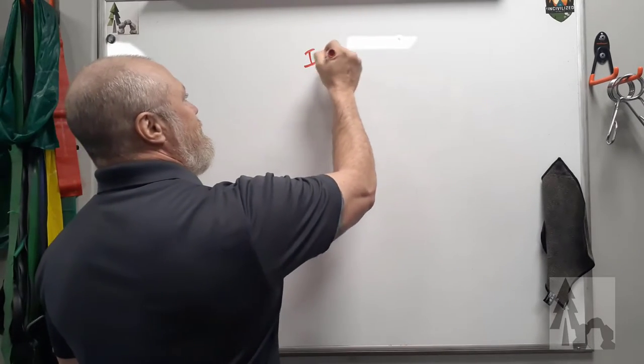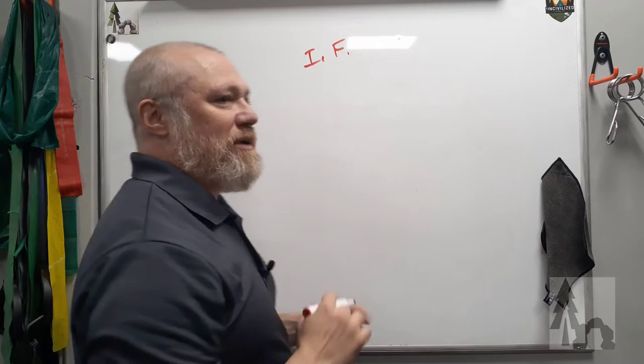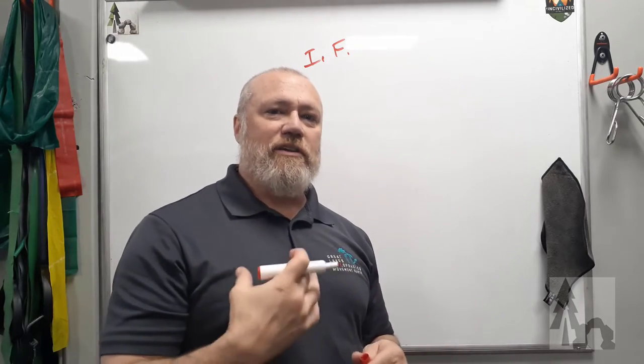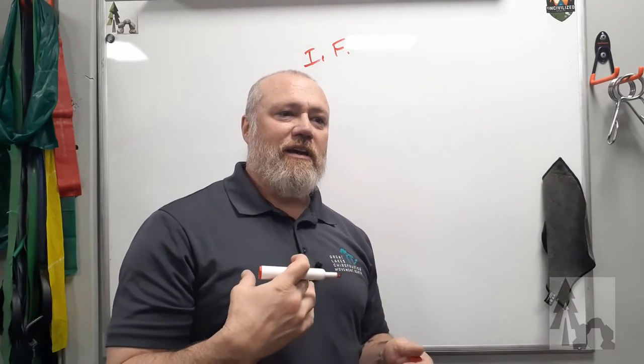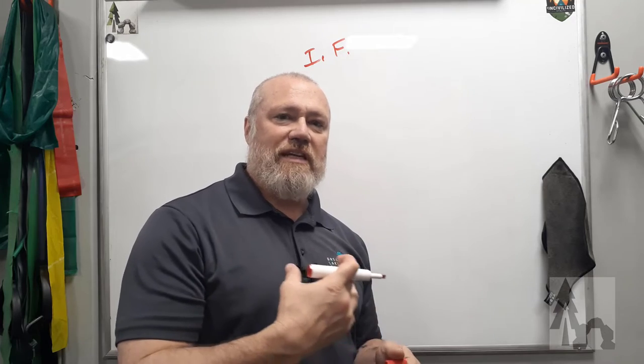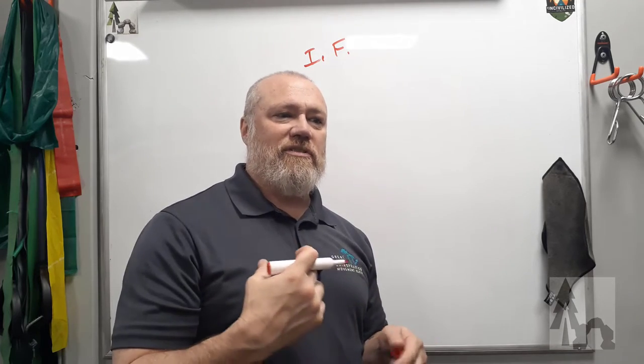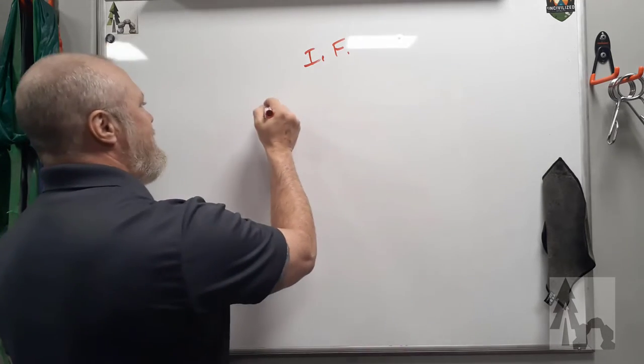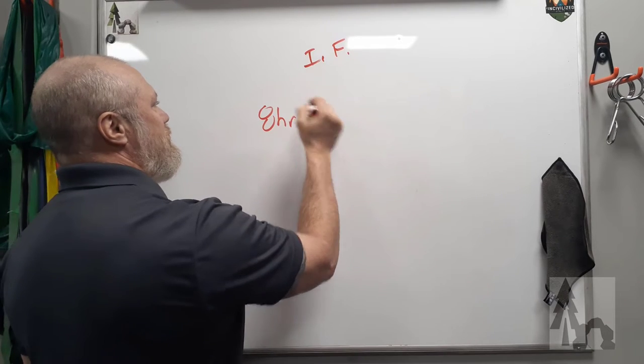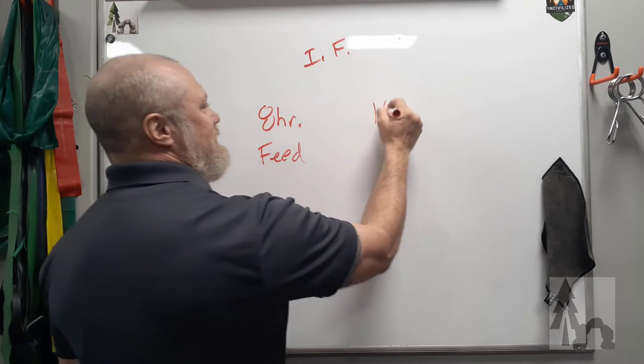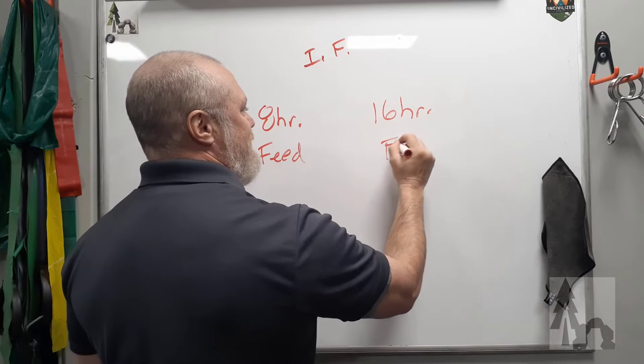So we talked about IF. The simplest intermittent fasting way to get started is to break your 24-hour day into a 10 and a 14 or an 8 and a 16 or a 6 and an 18. What I mean by that is you're going to give yourself eight hours to feed and then 16 hours to fast.